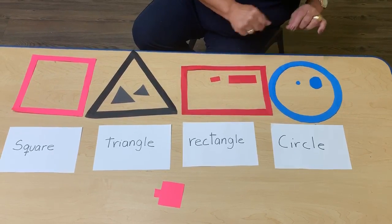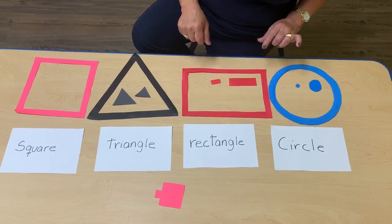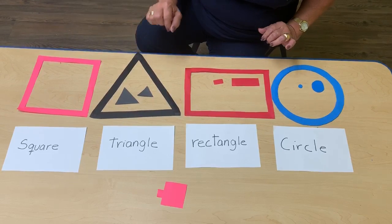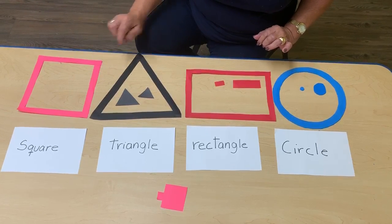It's blue circle. Rectangle is red. Black and pink.